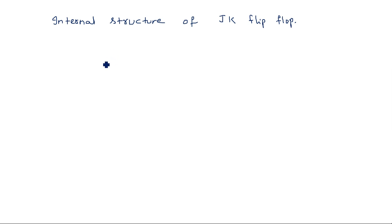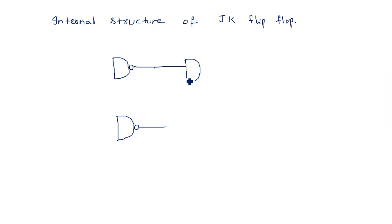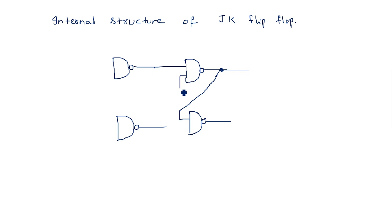Here we have two NAND gates as in the SR flip-flop. First we have two NAND gates whose outputs are given to two more NAND gates. The first two NAND gates are for the steering or controlling purpose, and the second two NAND gates are for the latch purpose. The output is connected as one of the inputs — this is Q and this is Q-bar. This input is J and this input is K.